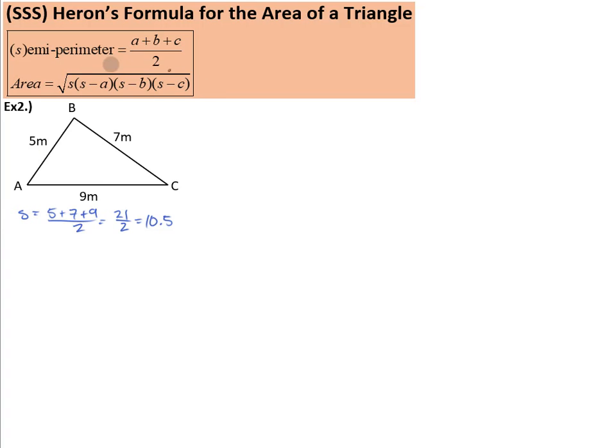So note that that value S is used four times in Heron's formula. But it's actually a pretty easy formula to memorize. It is the square root of our semi-perimeter, 10.5, times the semi-perimeter minus each side. So 10.5 minus 5, times 10.5 minus 7, and times 10.5 minus 9. Note that all of those will give you a nice positive value.